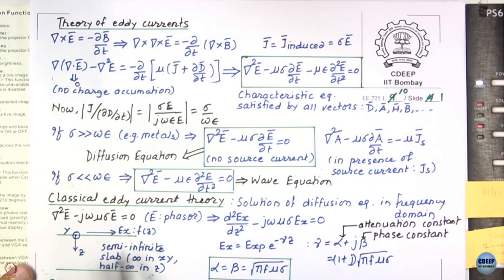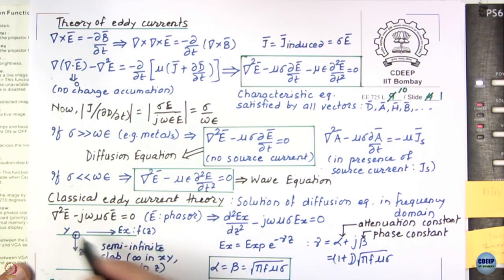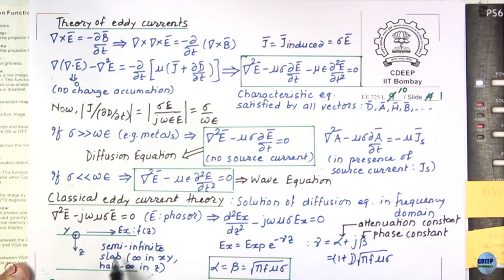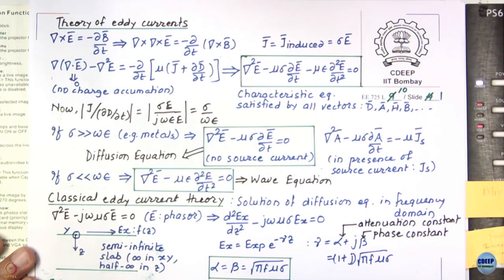This is what is known as a semi-infinite slab conducting plate. It is called semi-infinite because it is infinite in the x and y directions and half-infinite in the z direction. We are actually analyzing the diffusion of currents, eddy currents, and diffusion of fields into this metal plate.